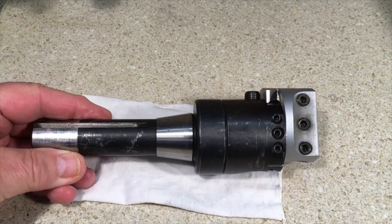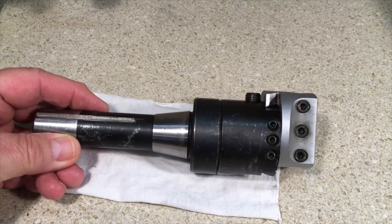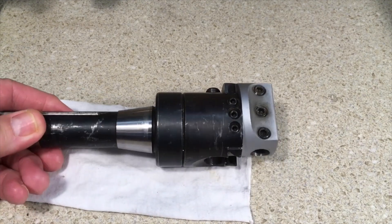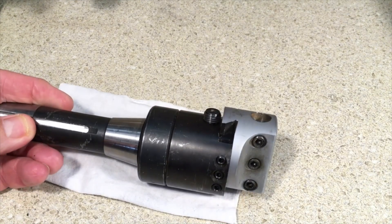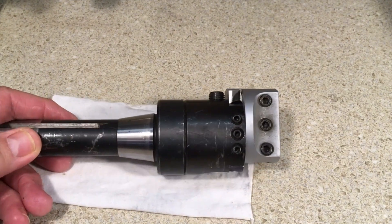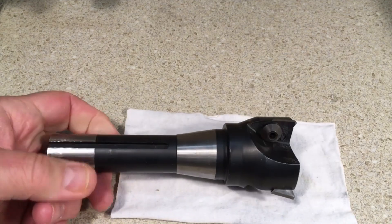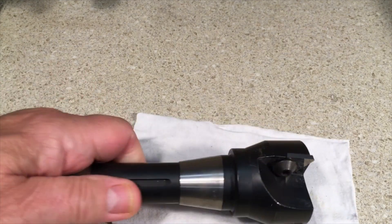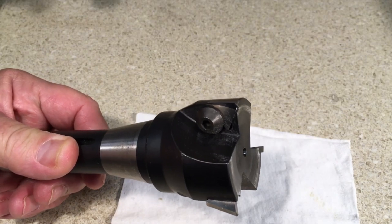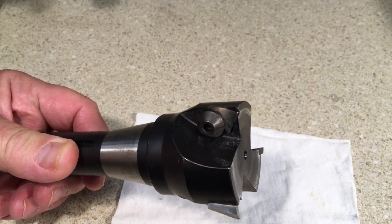There's a variety of other types of tooling that also fits into the R8 spindle. This is an example of a boring head which is used to bore holes that are typically larger than you can drill with a drill bit. And this is an example of a face mill which is used to make a wide cut, in this case two inches wide, on the flat surface of a workpiece.